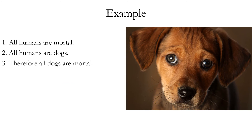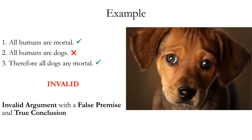Another example: All humans are mortal — true. All humans are dogs — false. Therefore, all dogs are mortal — true. Is this argument valid or invalid? The answer is invalid. Even if all humans are mortal and all humans are dogs, it would not prove that all dogs are mortal. Just because all humans are dogs, it doesn't mean that all dogs are humans. This is an example of an invalid argument with a false premise and a true conclusion.